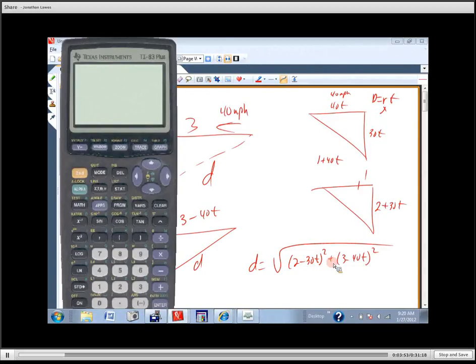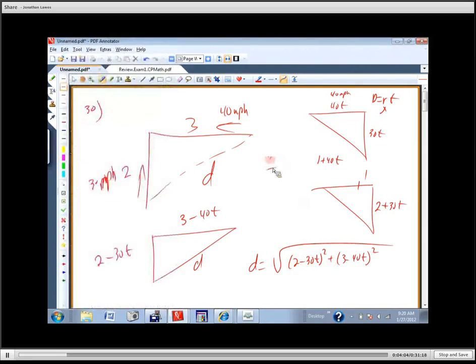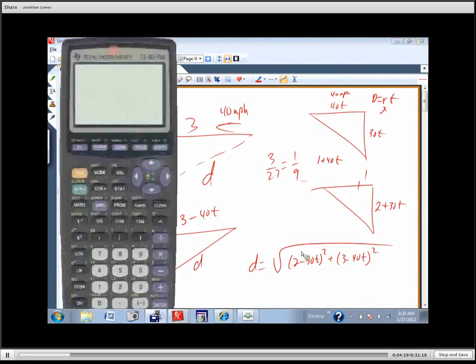I mean, if you can take, say, 3 and divide it by 27 and reduce that, that's about as tough as it gets. Let me write that down for you. 3 over 27. So you can see it. That's not bad, is it? It's one ninth.